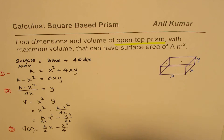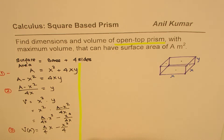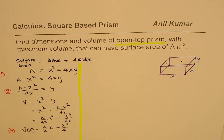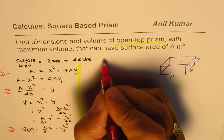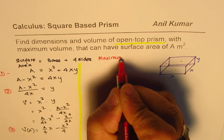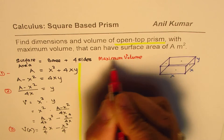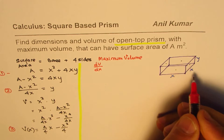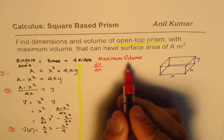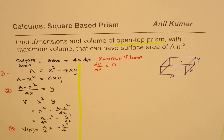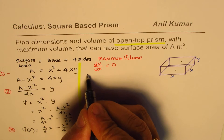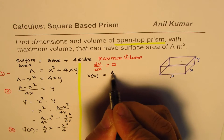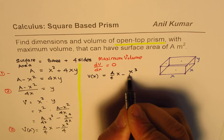So far we have related the side X with volume, and also related the two variables X and Y. Now the question is to maximize volume. When we say maximum volume, we want the rate of change of volume with respect to X to be zero — that is the criteria. We begin with the volume expression: V = (A/4)X − X³/4.